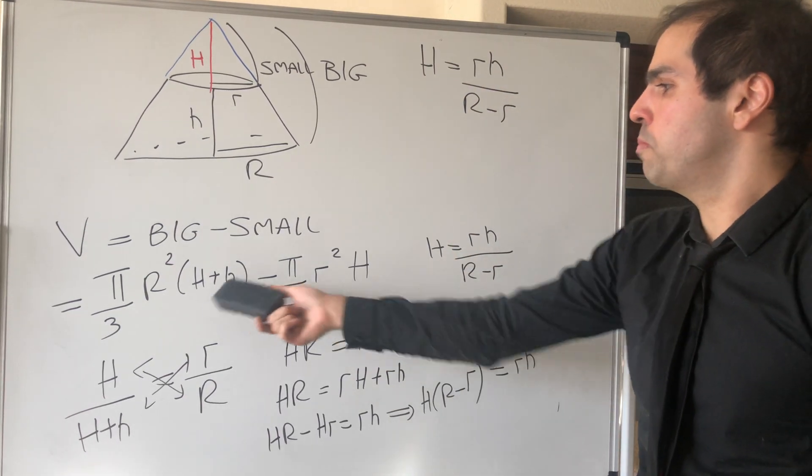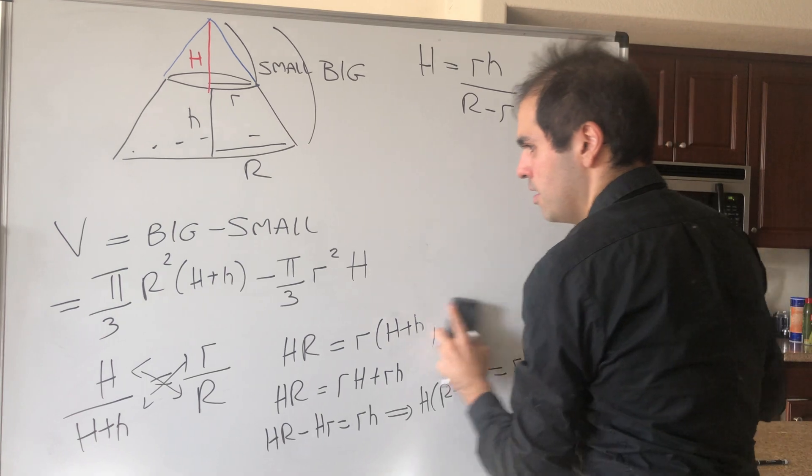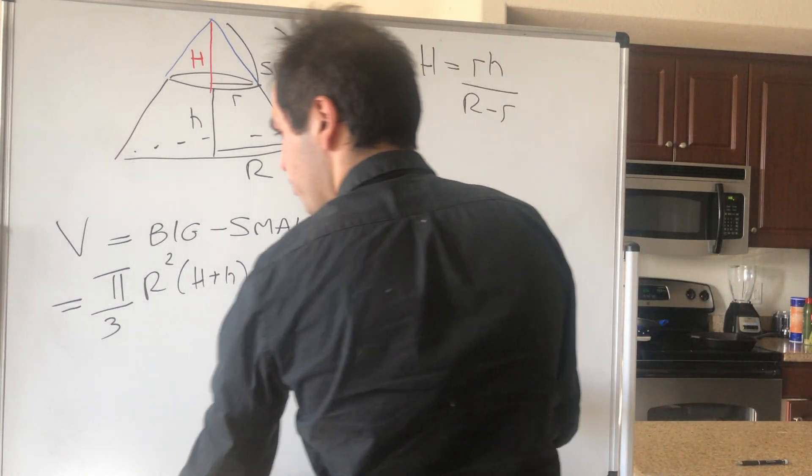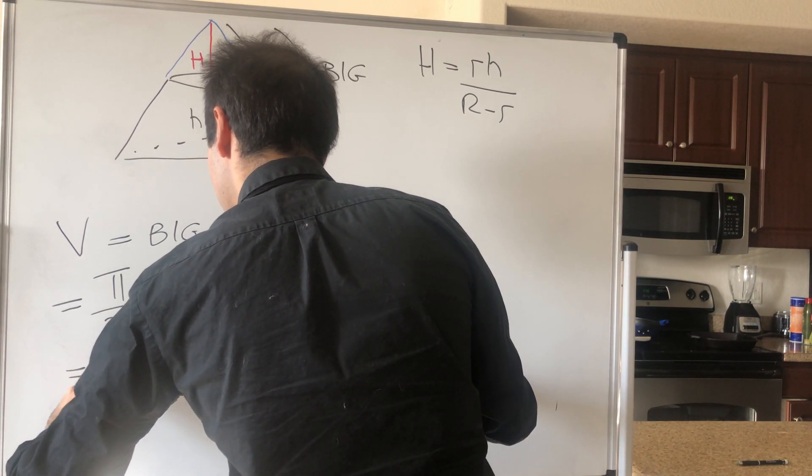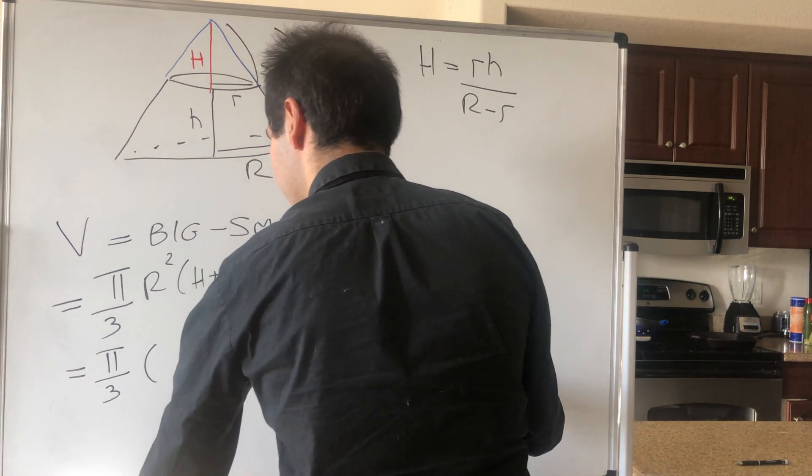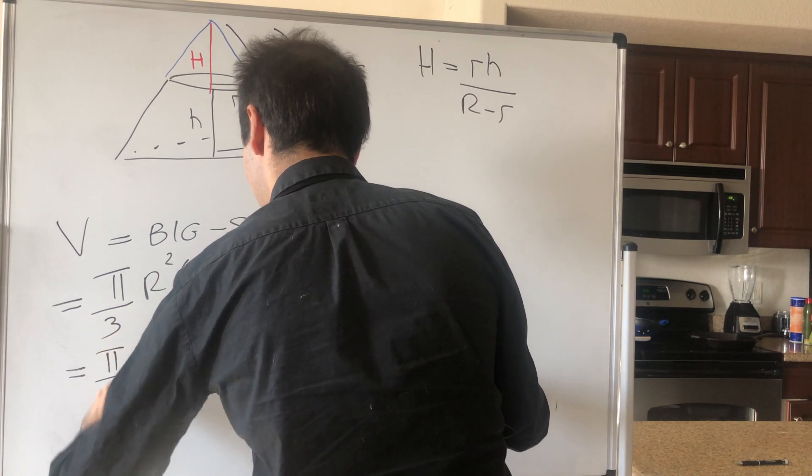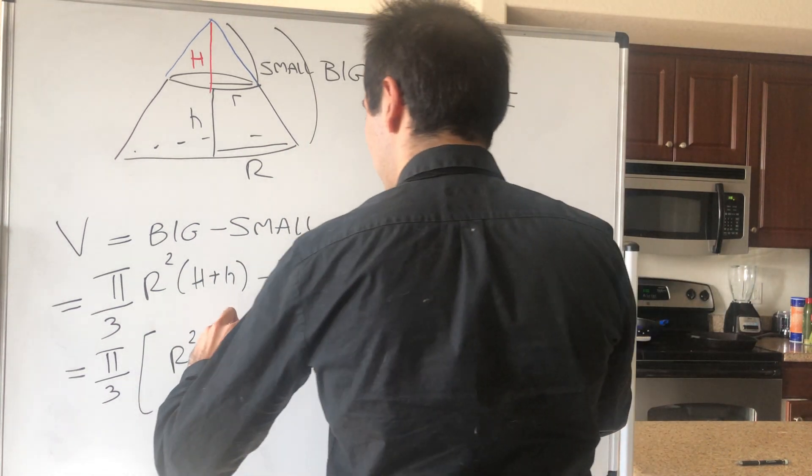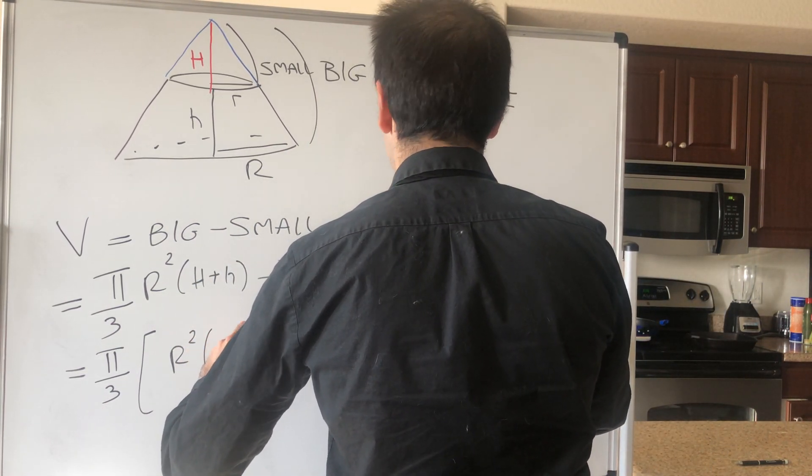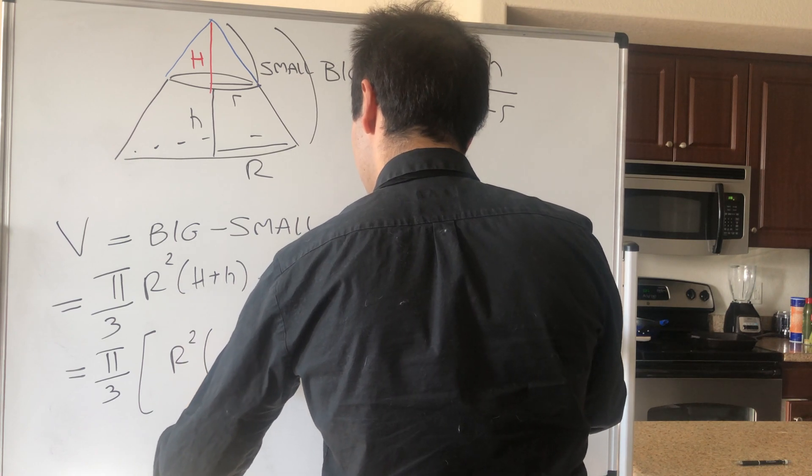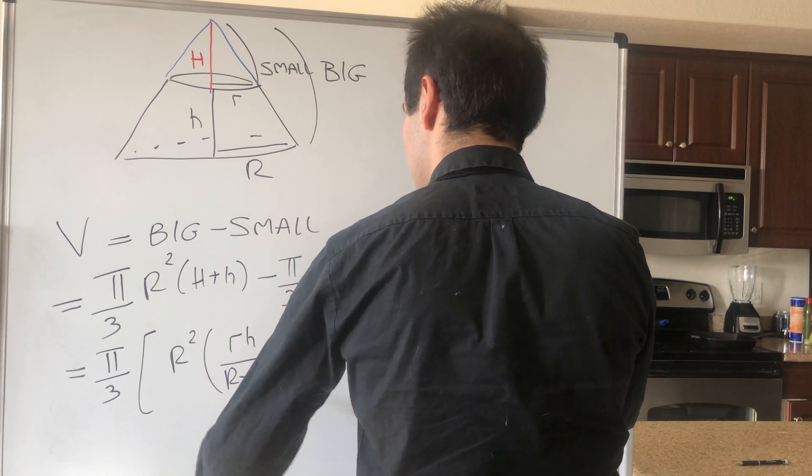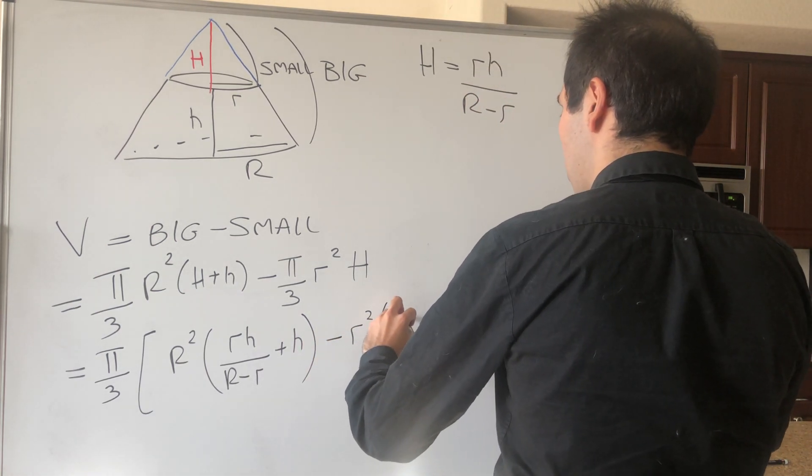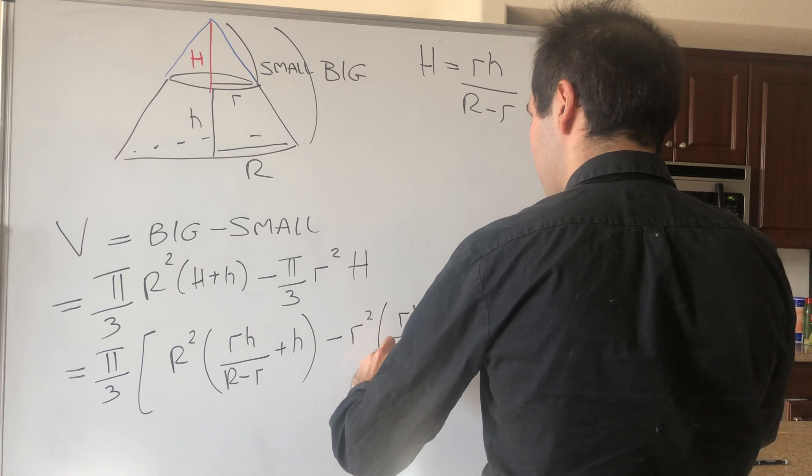And all we need to do is plug this back into this formula. So what we get is pi over 3 times R squared times (h plus H), so rh over (R minus r) plus h, and then minus r squared times the same thing, rh over (R minus r).